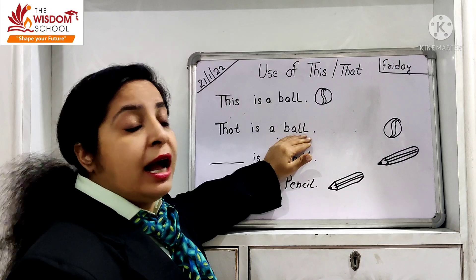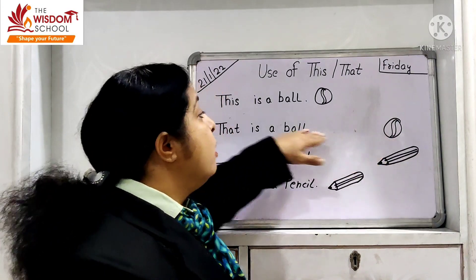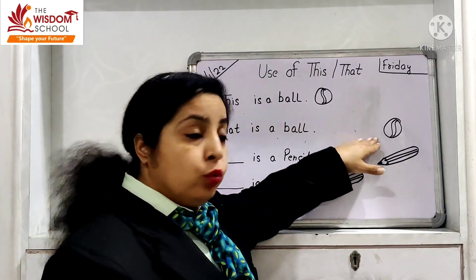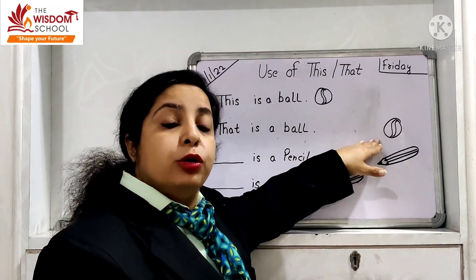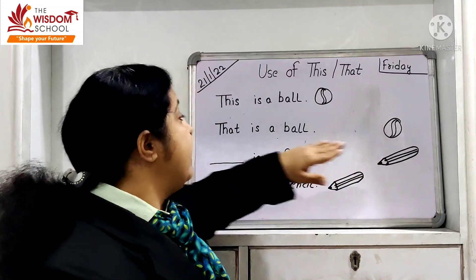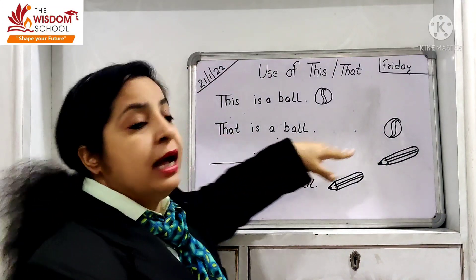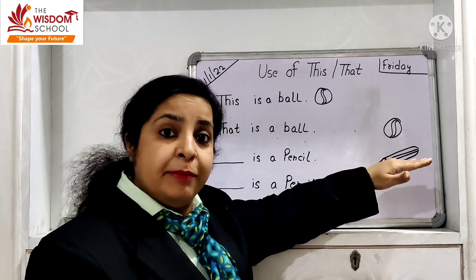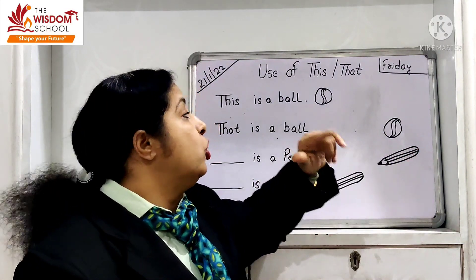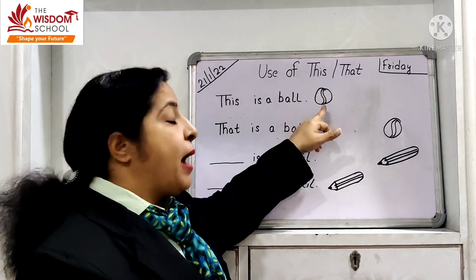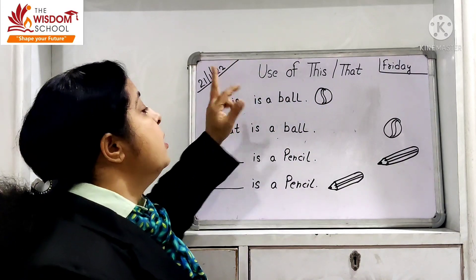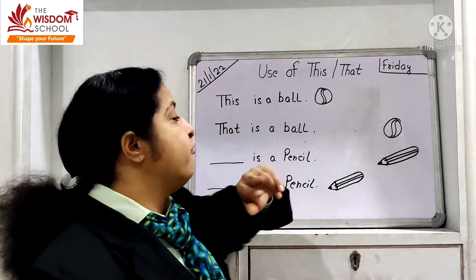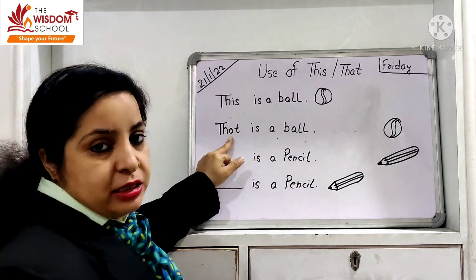Maine kyun likha 'That is a ball'? Kyunki ye jo ball hai, woh is sentence se thodi door hai na. Toh yahaan par humne kya likha? 'That is a ball.' Jo cheez hamarai paas hai, near hai — vahan par 'this'. Jo cheez door hai, far hai — vahan par 'that'.